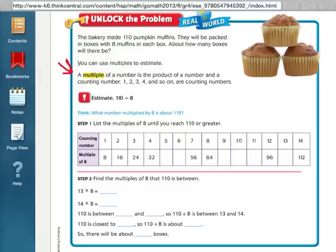So our problem here in Unlock the Problem is the bakery made 110 pumpkin muffins. And I'm just going to underline 110, so I know that's something important I'm going to have to use. They will be packed in boxes with 8 muffins in each box. About how many boxes will there be? So the division problem here is going to be 110 divided by 8. And they want us to find an estimate using multiples. This is how you do it.